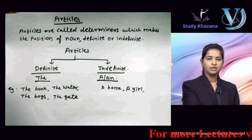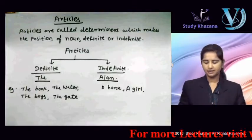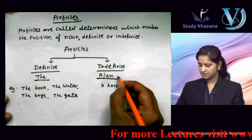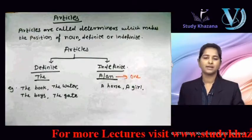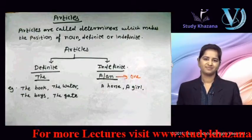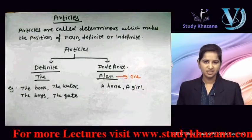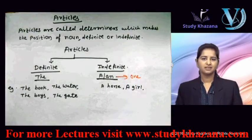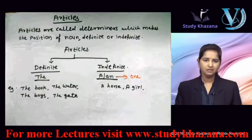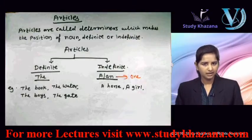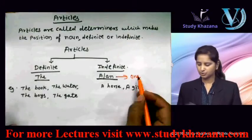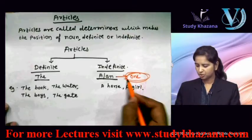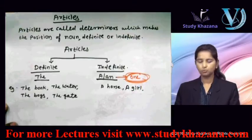In short, 'a' or 'an' denotes one. Jab hum singular countable noun ki baat karte hain, tab article 'a' ya 'an' ka use hota hai, which denotes one.